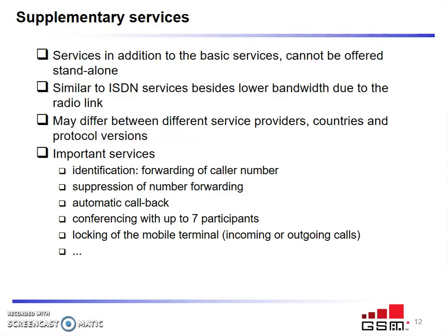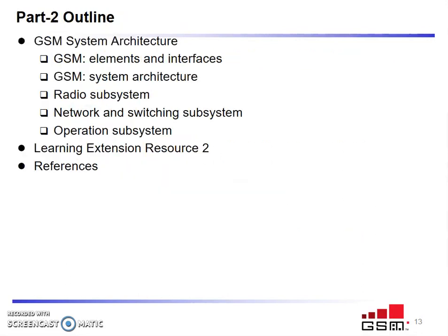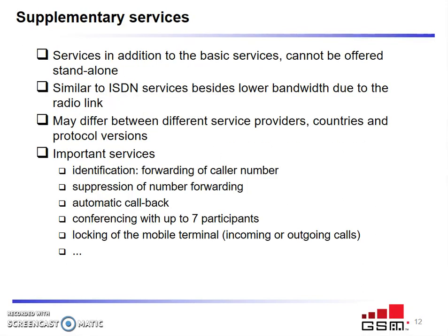Supplementary services are not mandatory — they are additions to basic services and differ between service providers, countries, and protocol versions. They are similar to ISDN services but with lower bandwidth due to the radio link. Examples include call forwarding, caller number suppression, automatic callback, video conferencing, and locking of the mobile terminal.